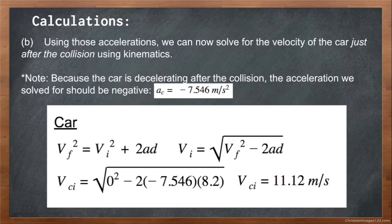Continuing part B, we will be using those accelerations we solved for in the last slide to solve for velocity of the car just after the collision. Note, because the car is decelerating out of the collision, the acceleration we solved for should be negative. So, the acceleration of the car out of the collision should be negative 7.546 meters per second.